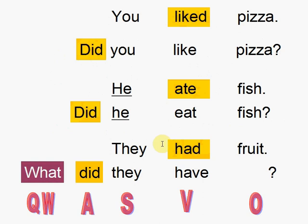Let's look at another sentence: 'They had fruit.' By looking at the verb, I can see that the verb is in the simple past. So the auxiliary of the simple past is 'did'. I'm going to put the auxiliary 'did' before what used to be the affirmative sentence: 'Did they have?' You could even put a question word in front of that structure to look for specific information — the information here would be 'fruit'. So: 'What did they have?' — and the answer would be 'fruit.'